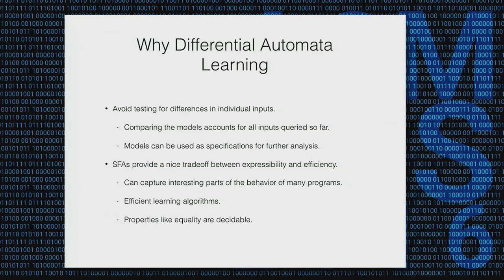The reason we chose symbolic automata as a representation for learning programs is that they provide a nice trade-off between expressibility and efficiency. We can capture interesting properties of many different kinds of programs. On the other hand, we have efficient learning algorithms so we can learn these representations efficiently. Moreover, we can check these models for equality, which is something we really want to do in the context of differential testing.